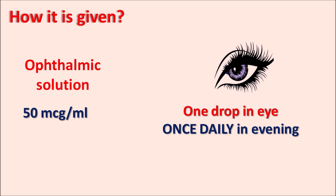In summary, latanoprost is a prostaglandin F2 alpha analog — an ophthalmic prostaglandin, identifiable by the suffix '-oprost'. Similar drugs include bimatoprost and travoprost; carboprost, despite having the same suffix, is not ophthalmic and is used to prevent postpartum hemorrhage. Latanoprost is a prodrug available as an isopropyl ester, which is hydrolyzed in vivo to produce latanoprostic acid, the active metabolite.